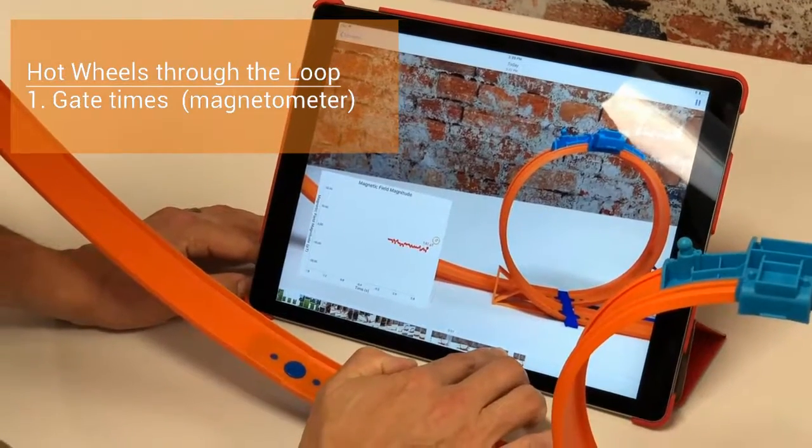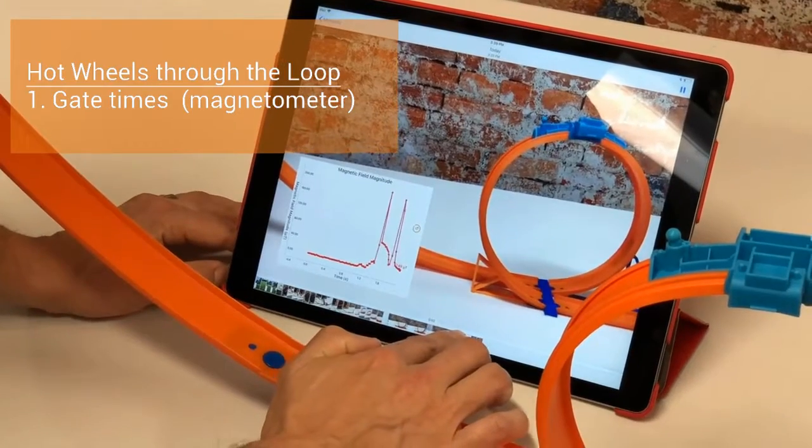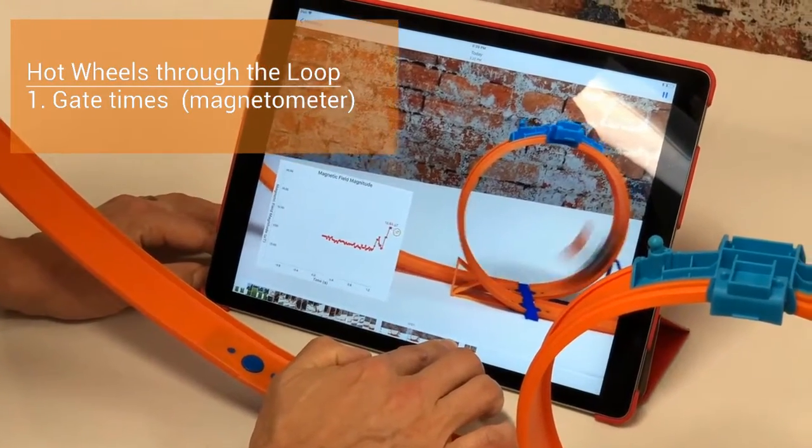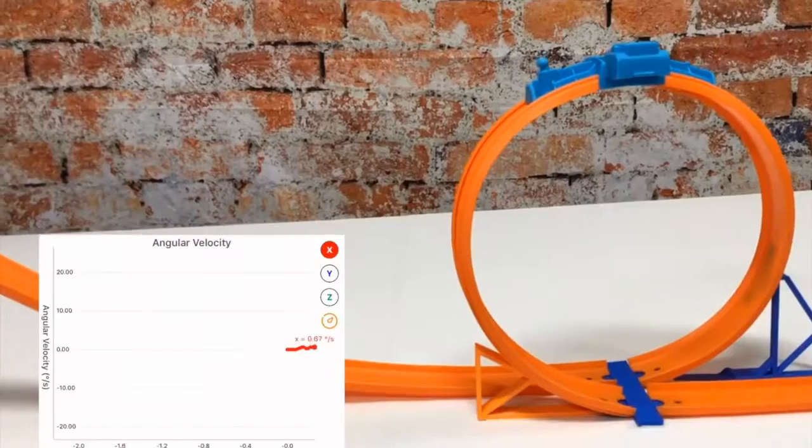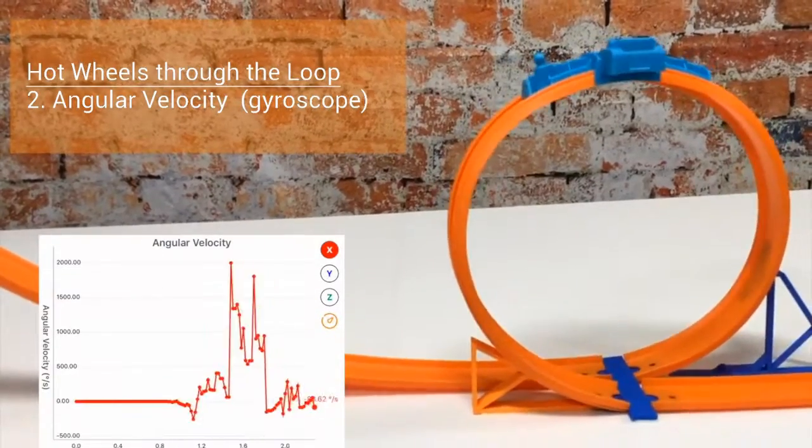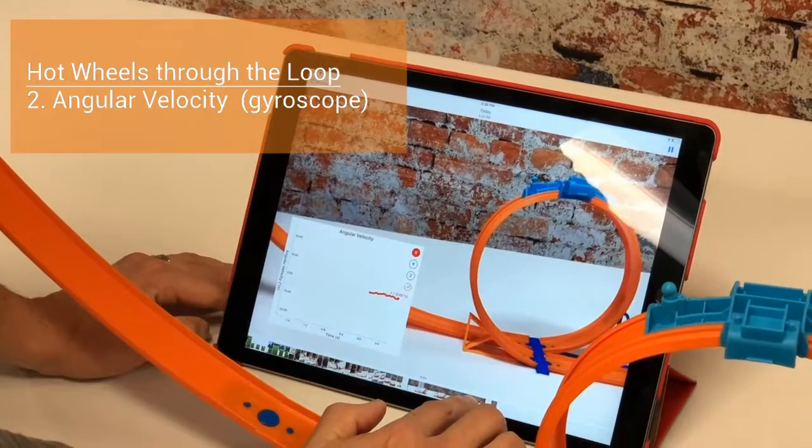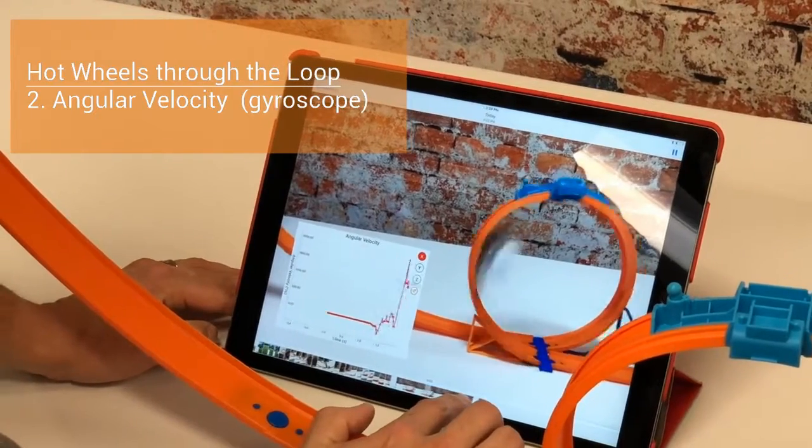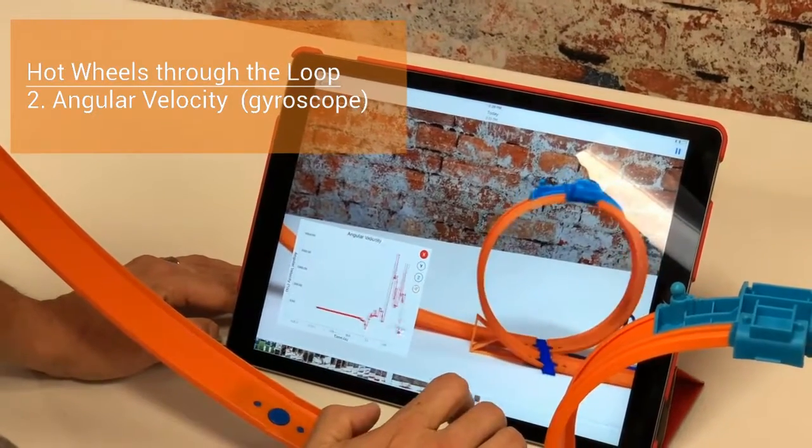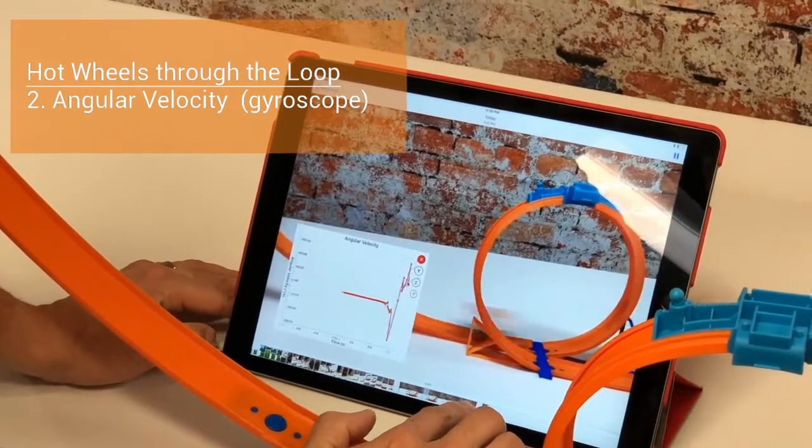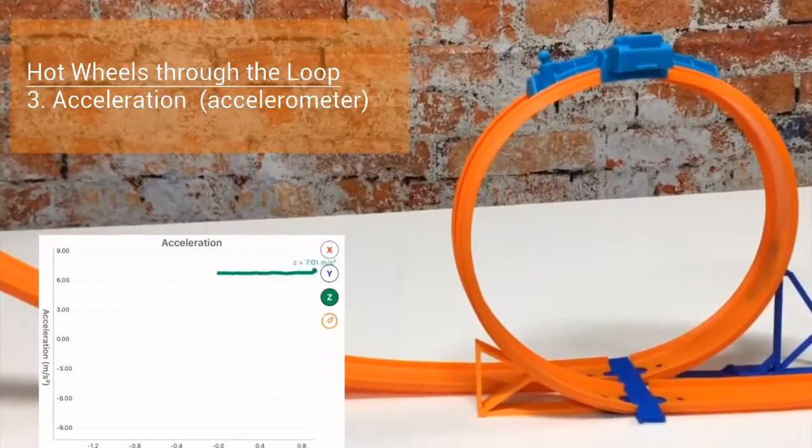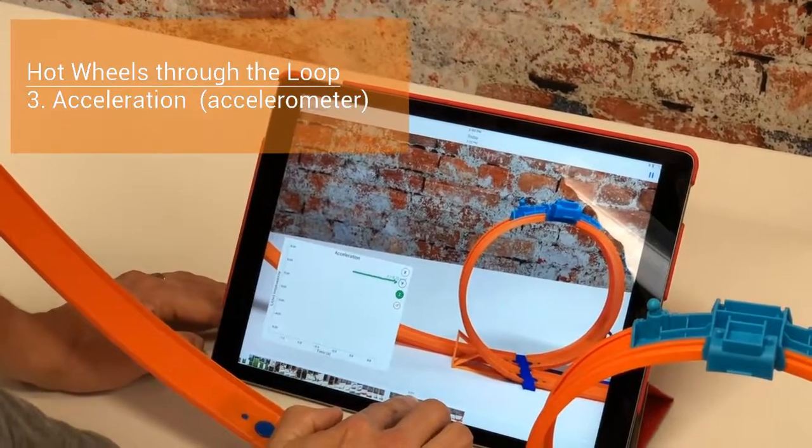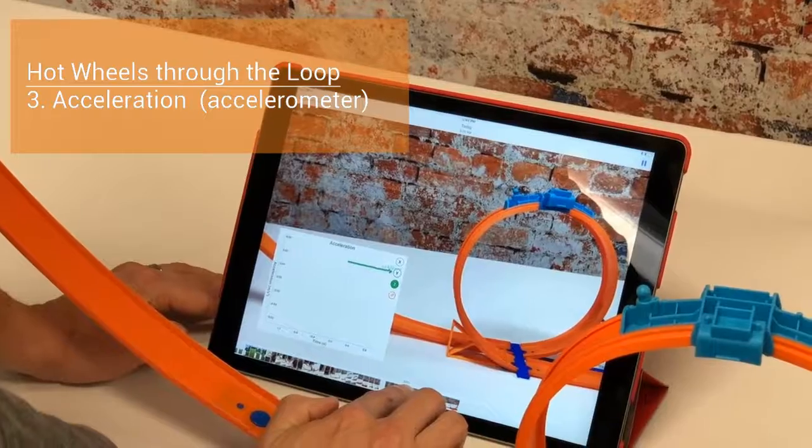Here we're measuring the gate times using the magnetic field. Here we're measuring the angular velocity using the gyroscope. Here we're measuring the acceleration, or the G-forces felt, using the accelerometer.